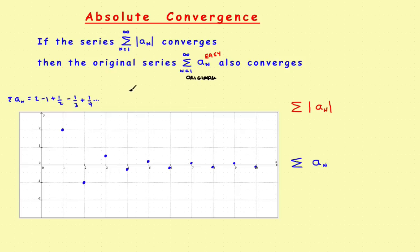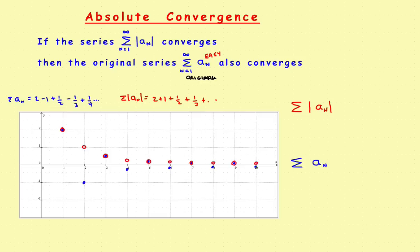Now suppose you took the absolute value of that series. All that does is make everything that's negative become positive. So rather than minus 1, it becomes plus 1; then plus 1/2, plus 1/3, and so on — everything turns positive. From a graphical point of view, every dot that was below the x-axis switches up and becomes positive, giving you this red series of dots — a positive series where all terms are above the x-axis.